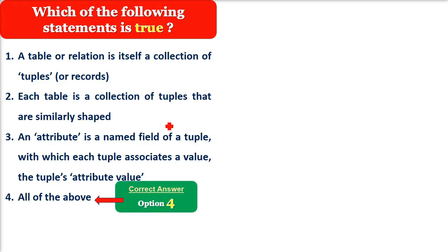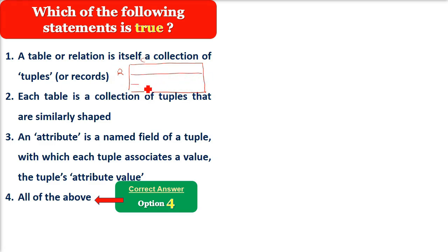سارے کے سارے صحیح ہیں — all of the above. اس سے پہلے کہ میں actual discussion کروں، پہلے سمجھ لیجے کہ آپ کا ایک table ہوتا ہے۔ Table میں rows ہوں گے اور columns ہوں گے۔ جیسے میں نے یہاں بنایا — یہاں تین rows ہو گئیں اور چار columns ہو گئے۔